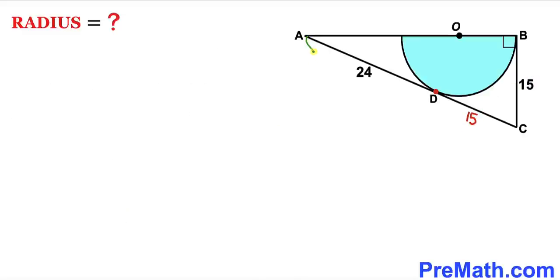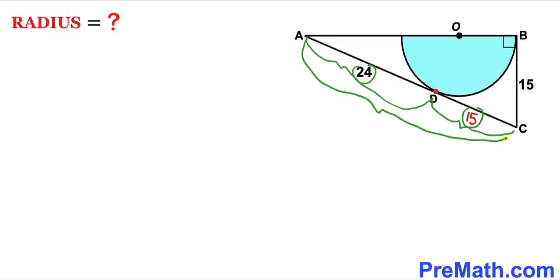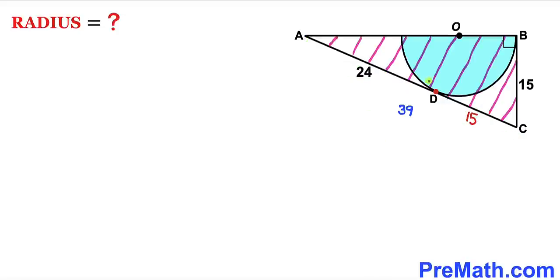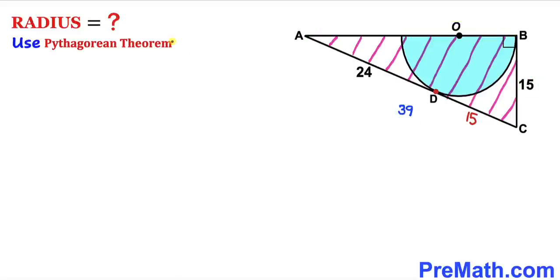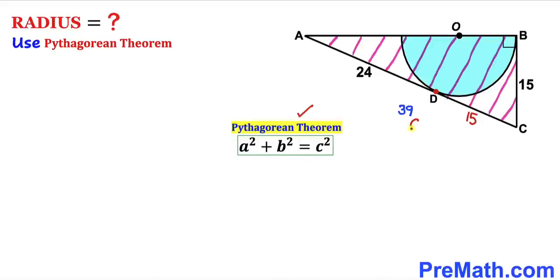We know that segment AD is 24 and segment CD is 15, so therefore the whole segment AC is going to be 24 plus 15, giving us 39 units. Now let's focus on right triangle ABC whose side lengths are 15 and 39, and calculate side length AB using the Pythagorean theorem: A squared plus B squared equals C squared.